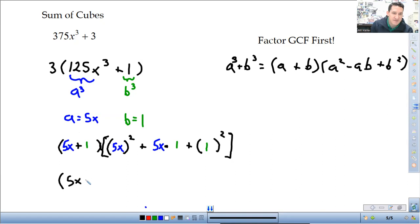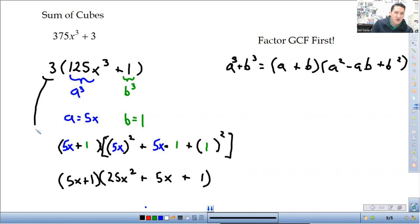Multiply that out. So, 5x plus 1. That doesn't simplify. 5x squared. 5 squared is 25. It'll be x squared. 5x times 1 is 5x. Plus 1 squared is 1. And then don't forget, we still have this 3 here. Bring it down and include that in our factors. And look at that. We are done.